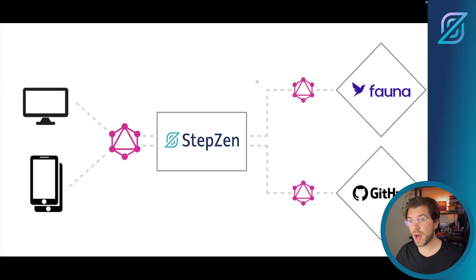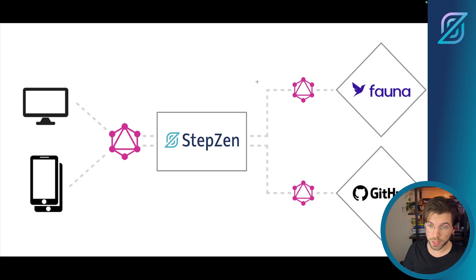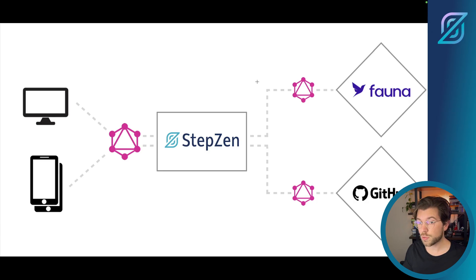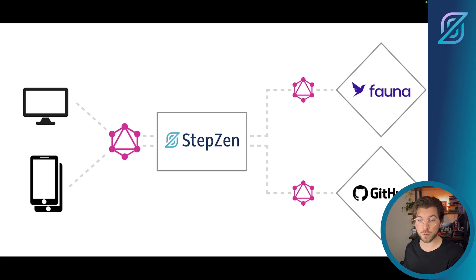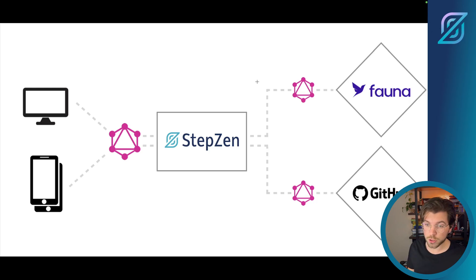Using Stepset, I will combine these repositories with data from Fauna. In Fauna, I will be storing some repositories, such as the ones you just saw on the GraphQL explorer for GitHub. I'll also be storing a collection called Highlighted, meaning that we will be taking repositories from GitHub and storing them as highlighted repositories in a Fauna database.